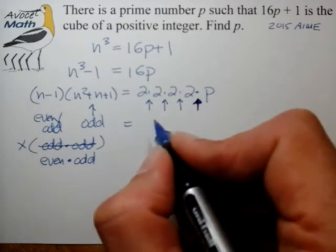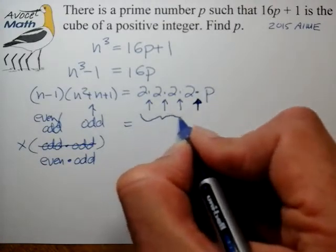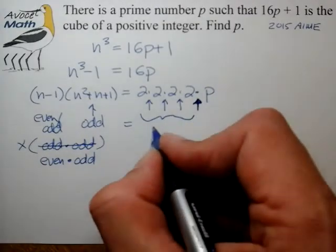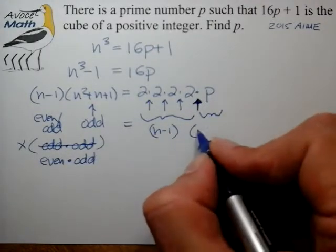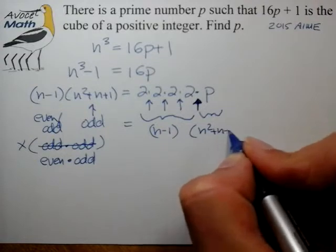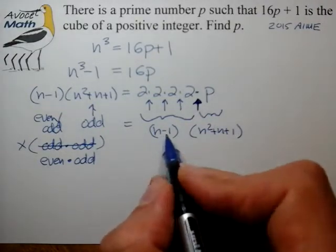It has to match up in such a way that the 2 times the 2 times the 2 matches up with the n minus 1. And this p here has to match up with the factor of n squared plus n plus 1. And from there it's pretty easy.